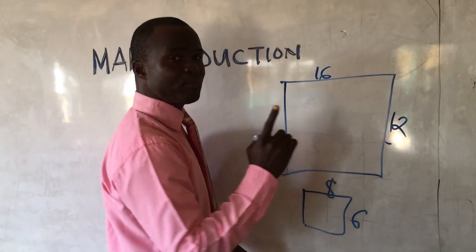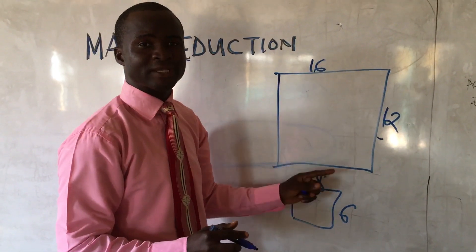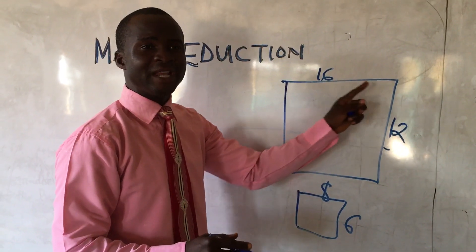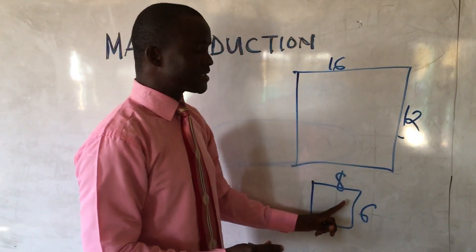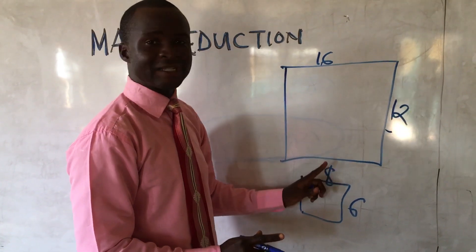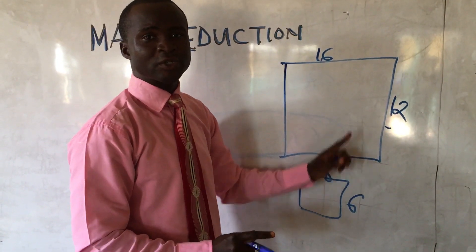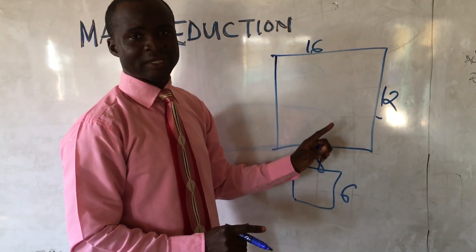This is the number one procedure: you have to know the length and breadth, then you divide the length and breadth by two. That is the first procedure that you must understand in map reduction and map enlargement.